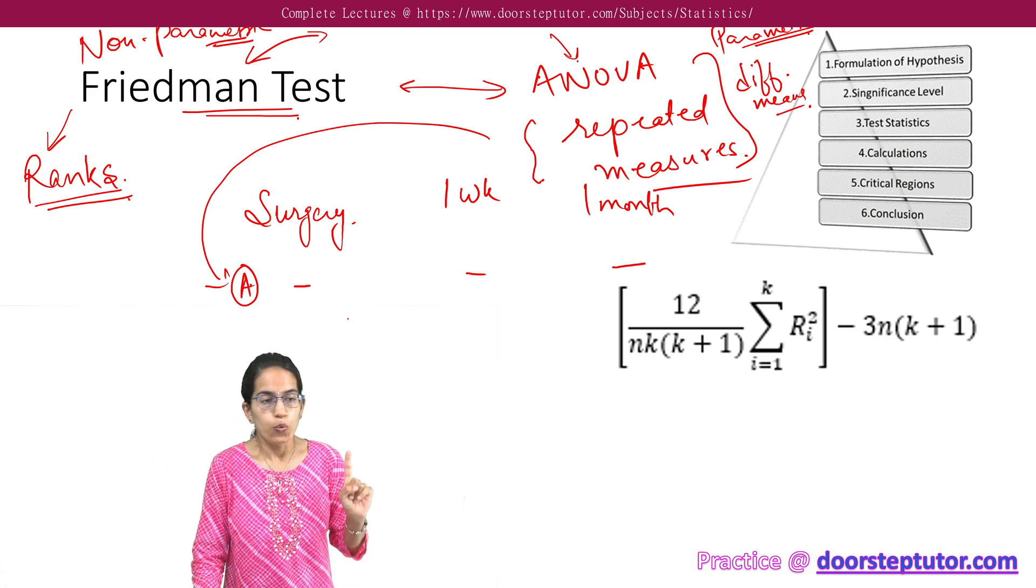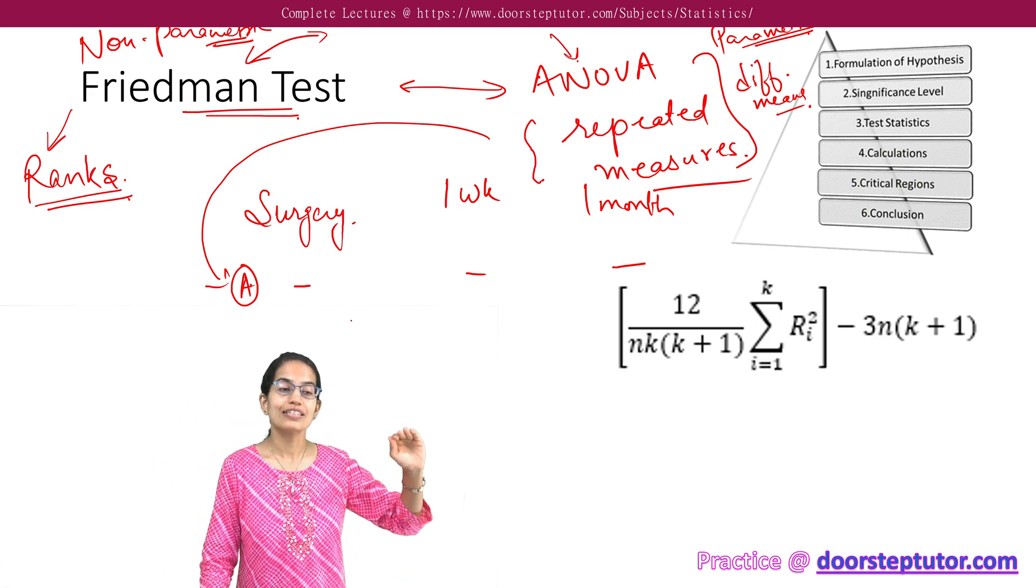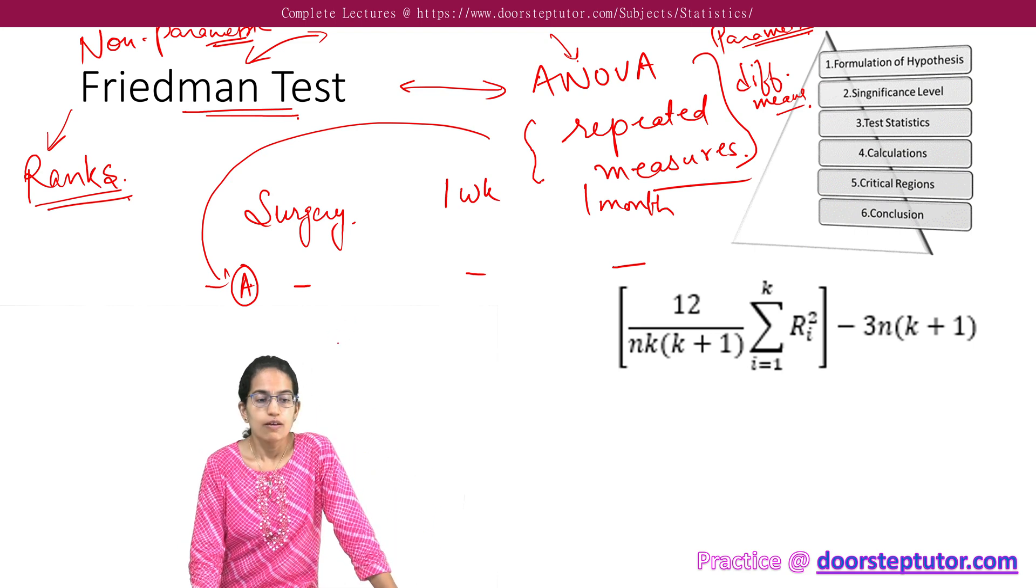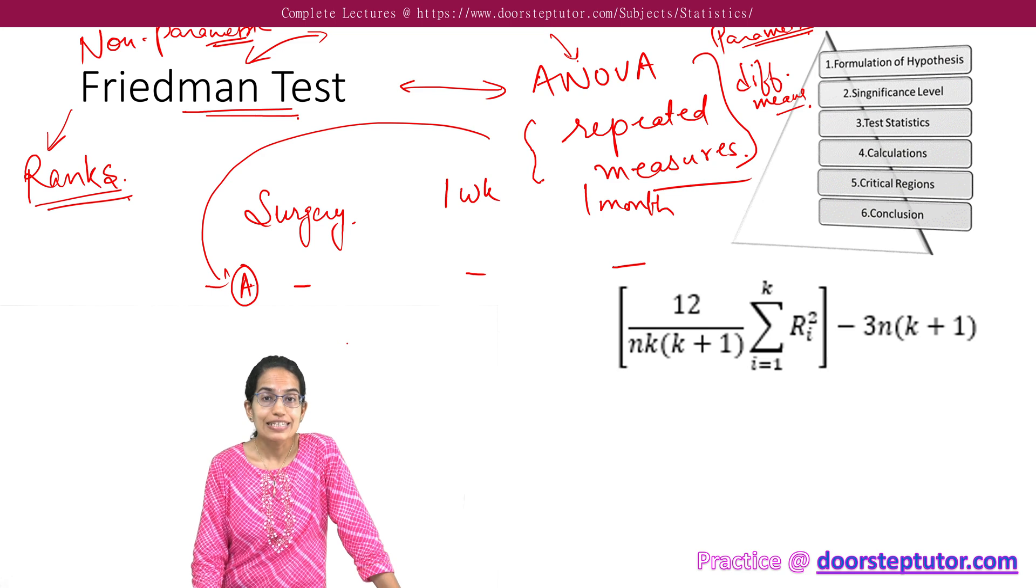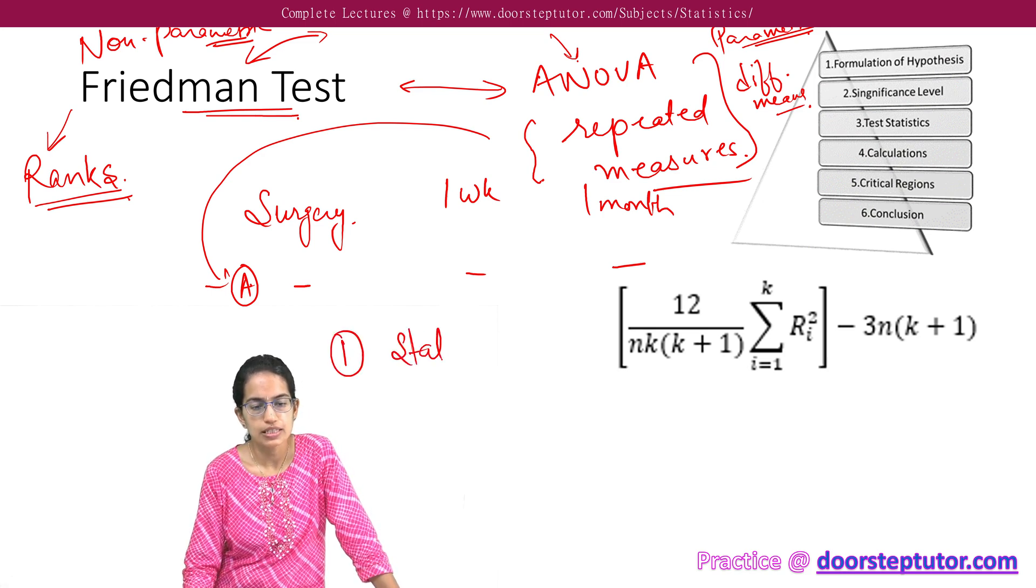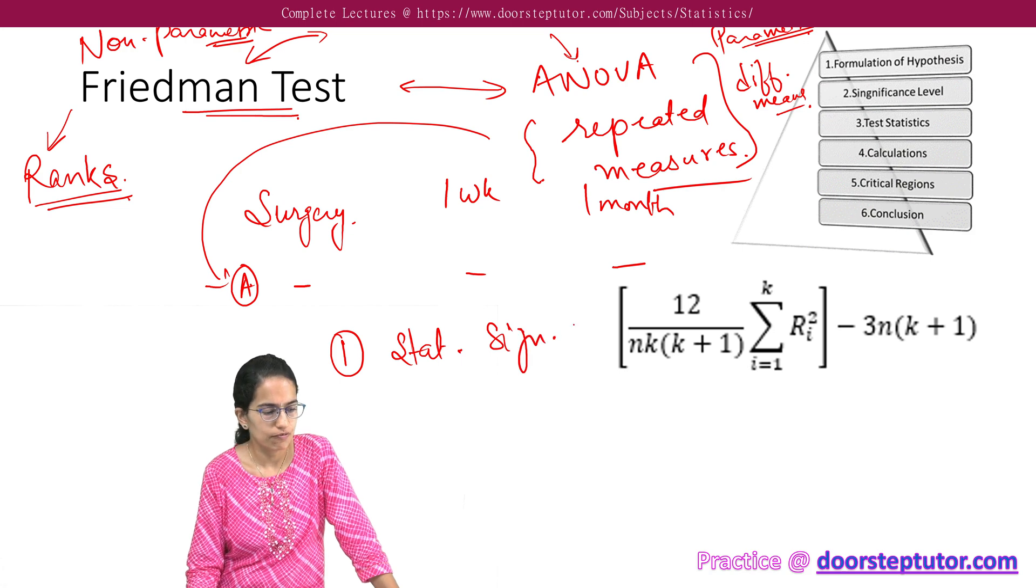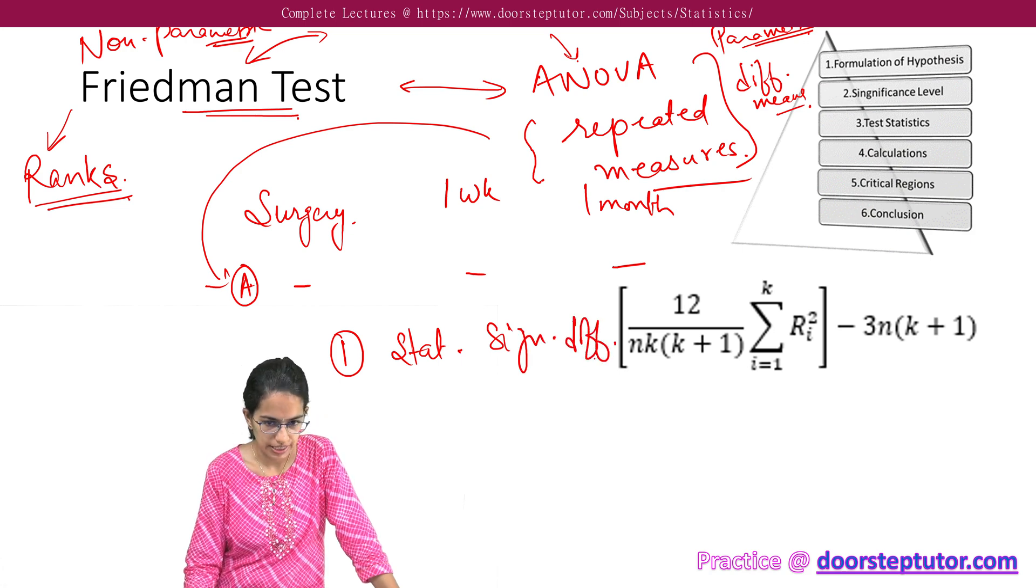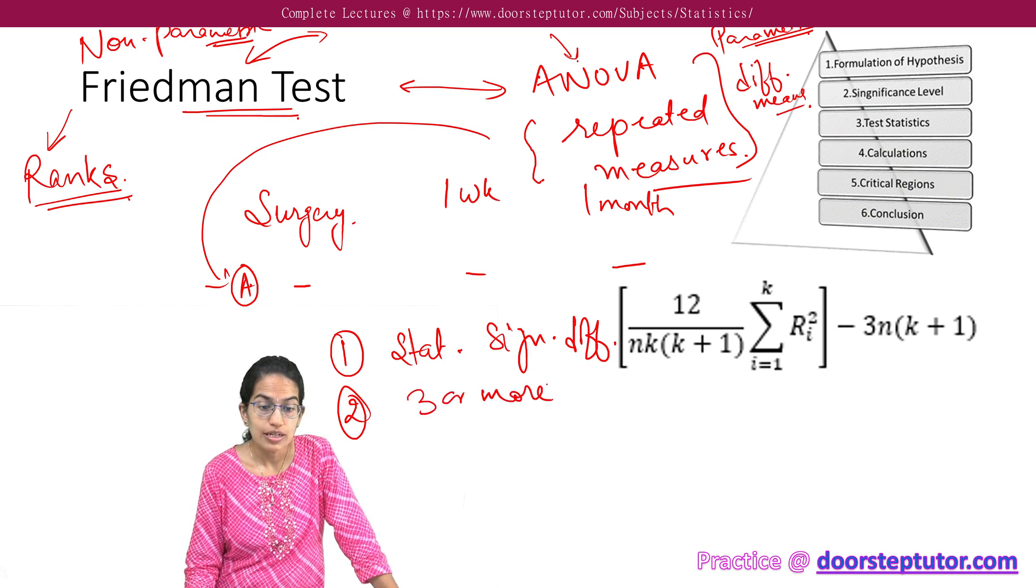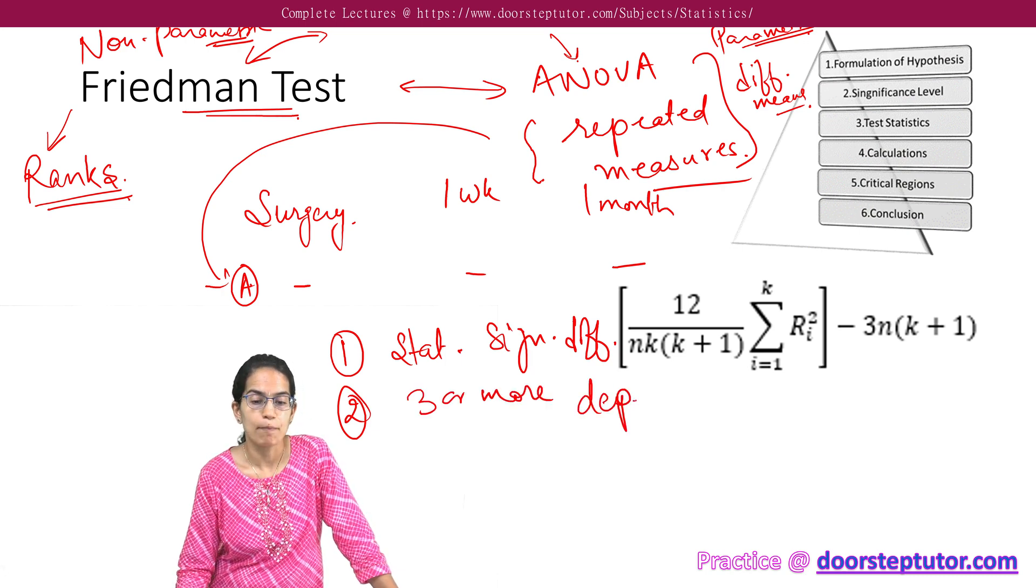Now, where and what are the prerequisites for Friedman test? First is, we try to find statistically significant difference. So the first important precondition is statistically significant difference that you are finding. The second is, there are three or more dependent samples.